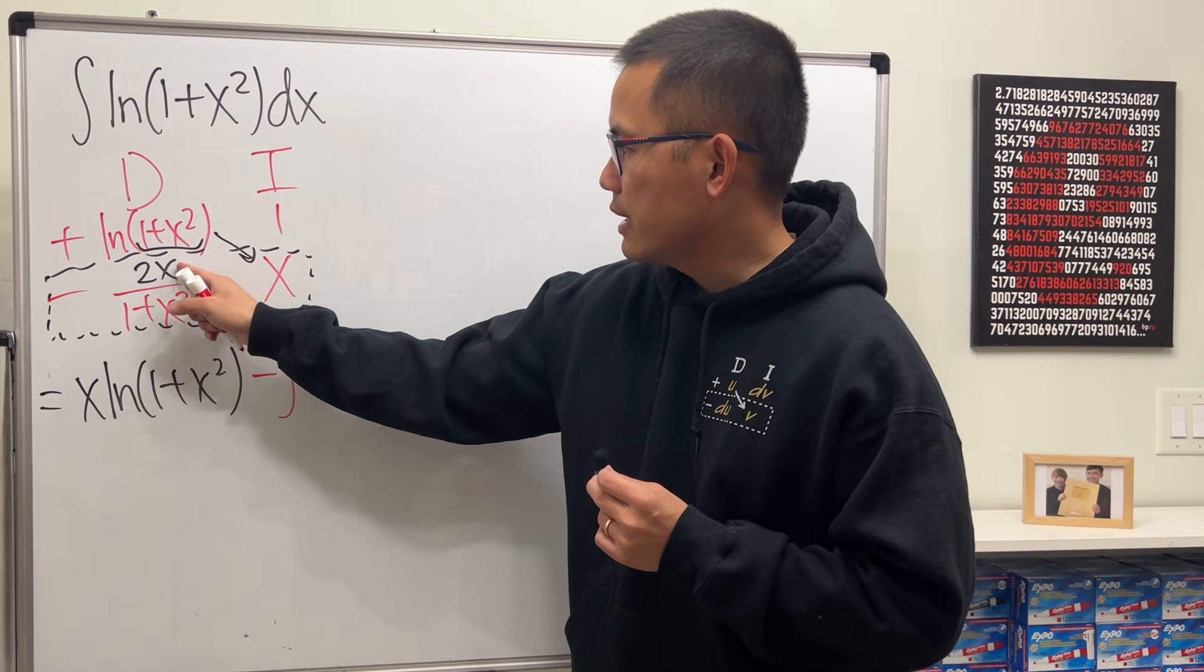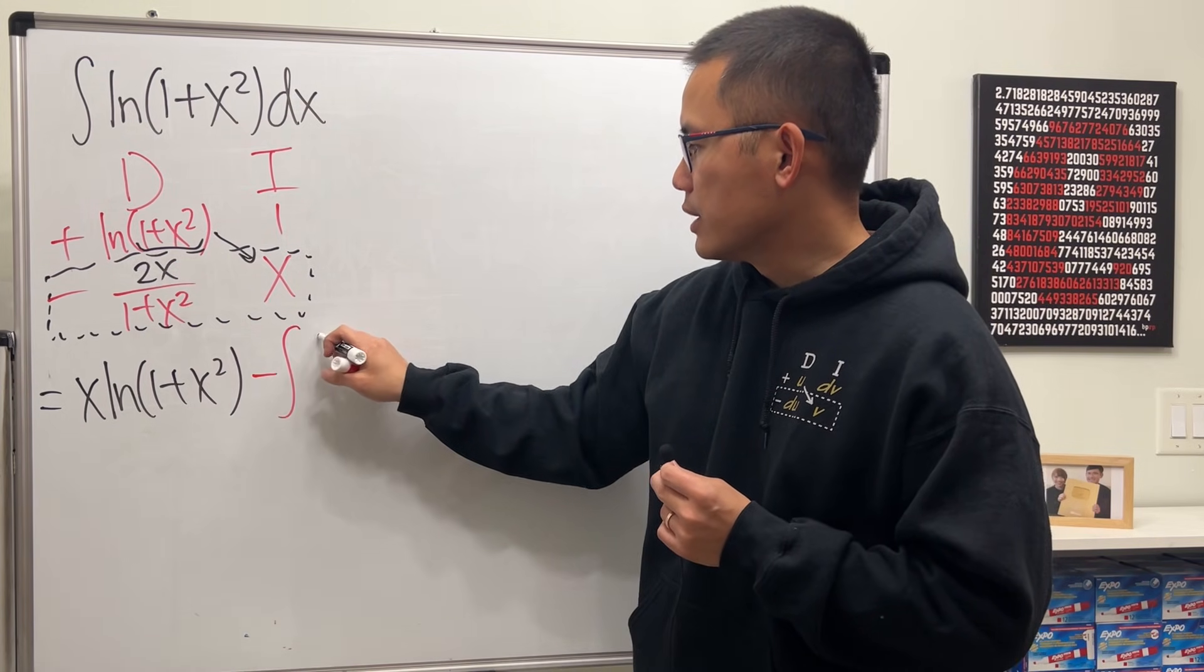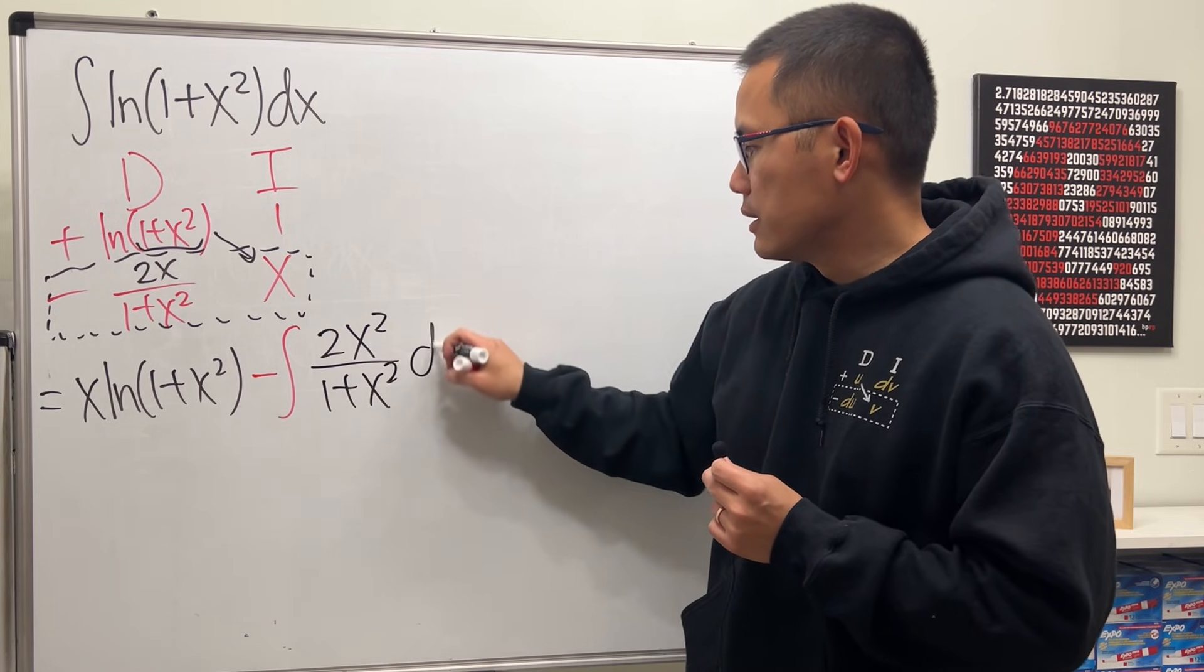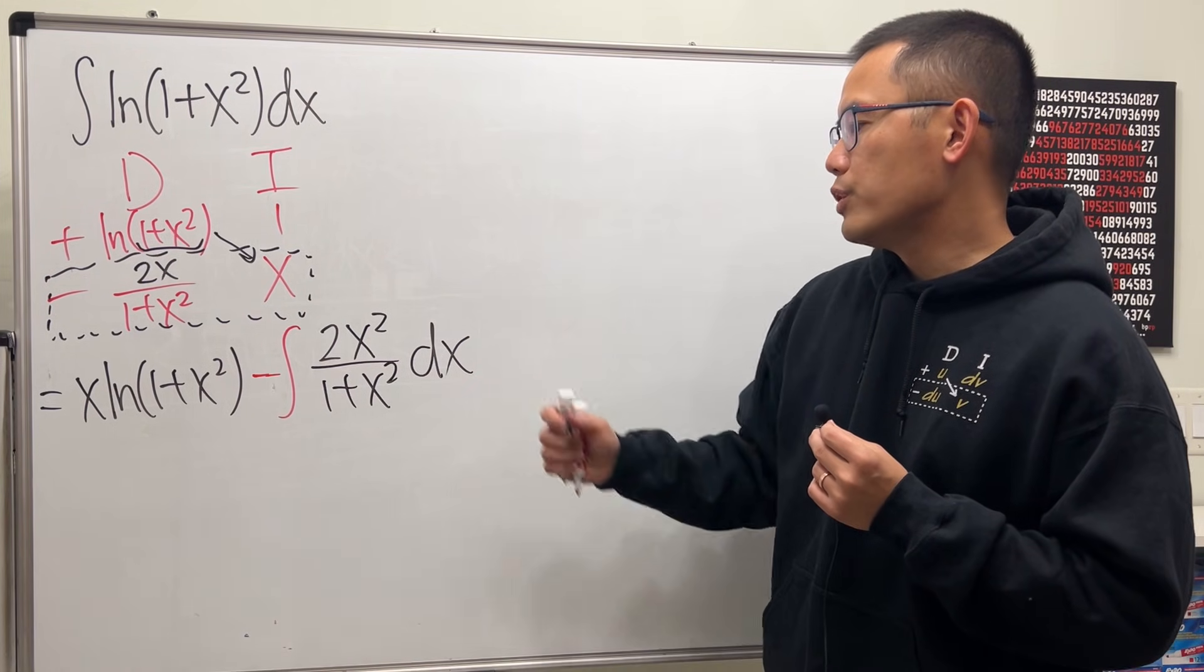And then we will have x times x, which is x squared. So we can say 2x squared over 1 plus x squared dx. Hmm, so how do we figure this out?